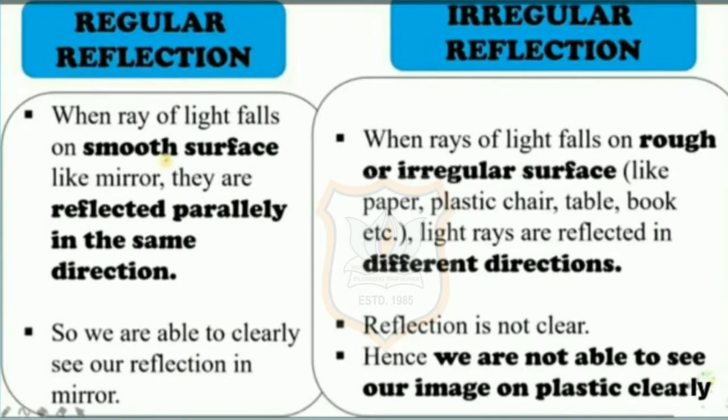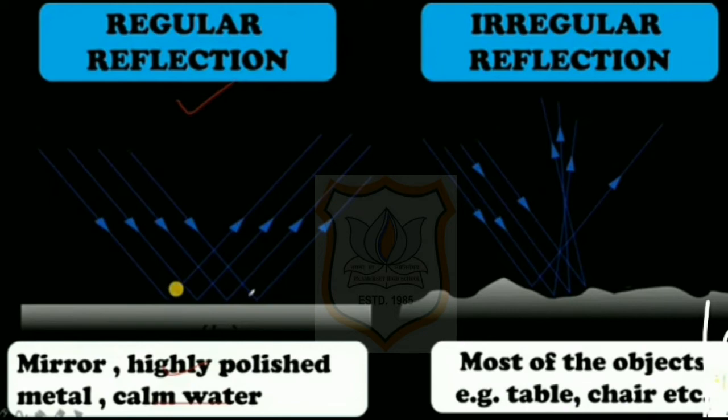Irregular reflection: when rays of light fall on rough or irregular surfaces like paper, plastic chair, table, book, etc., light rays are reflected in different directions. The reflection is not clear, and hence we are not able to see our image on plastic clearly. In the slide, the irregular reflections are shown with lines that do not move in parallel — so we cannot see the reflection clearly.